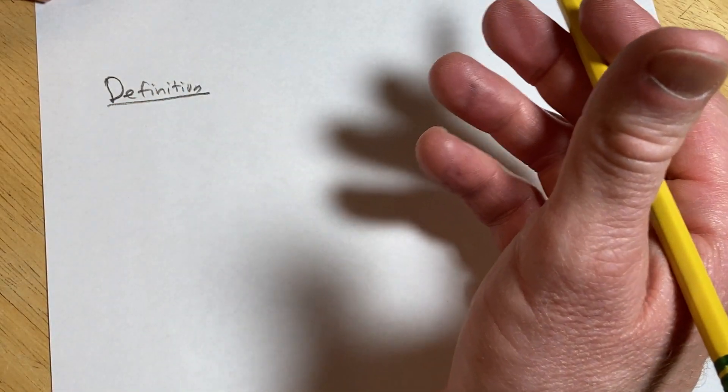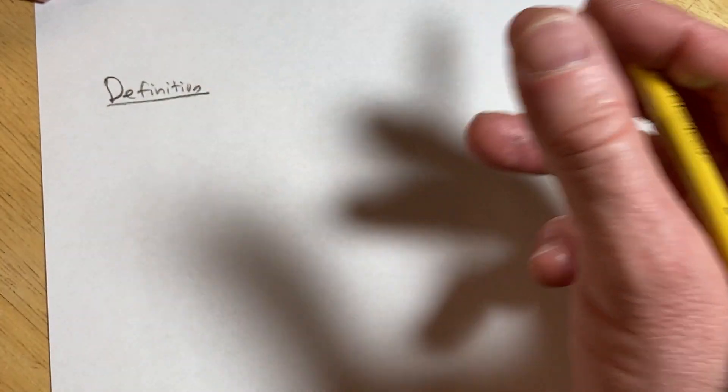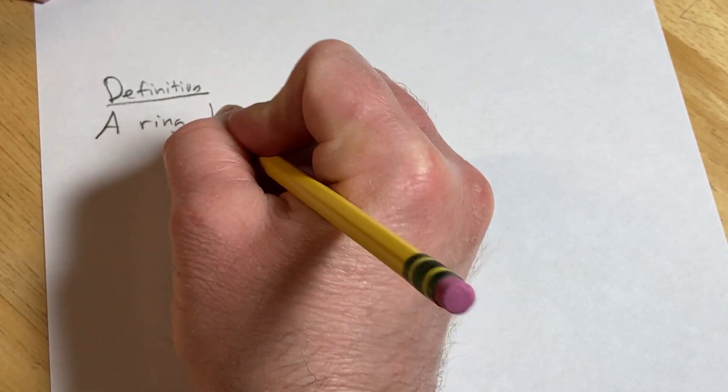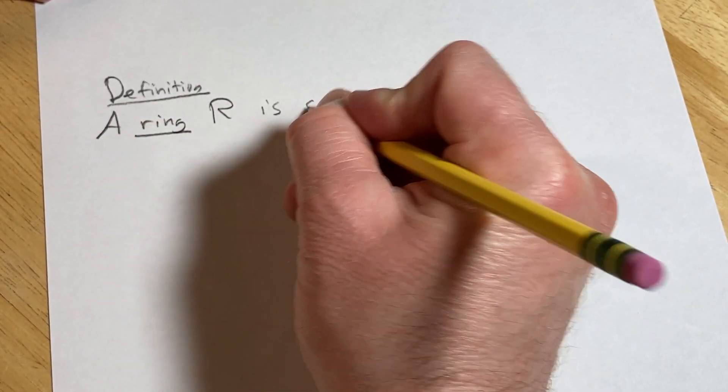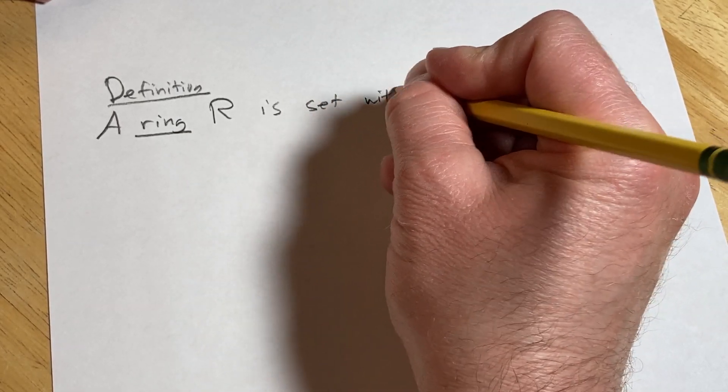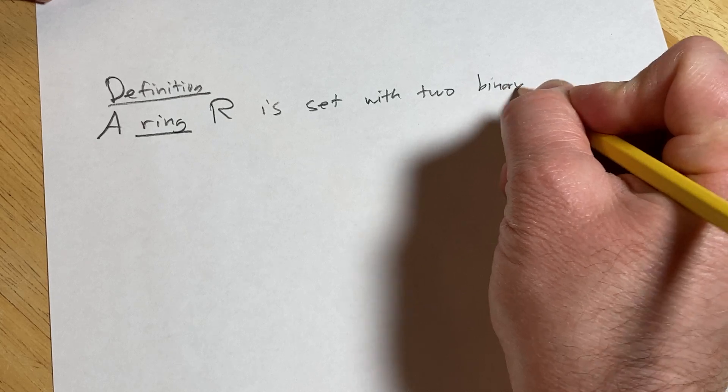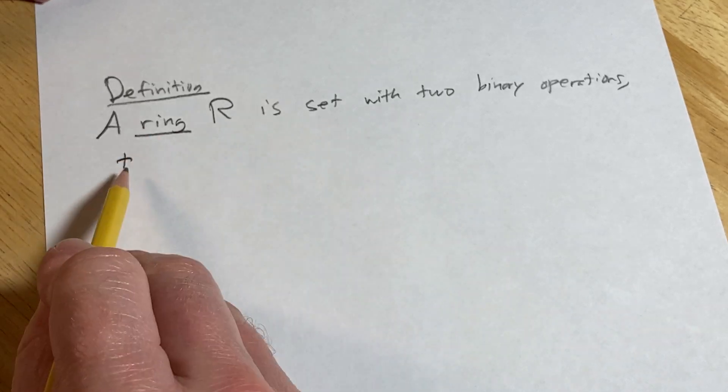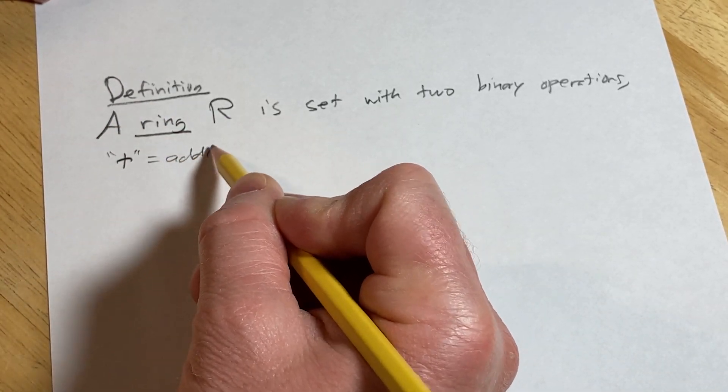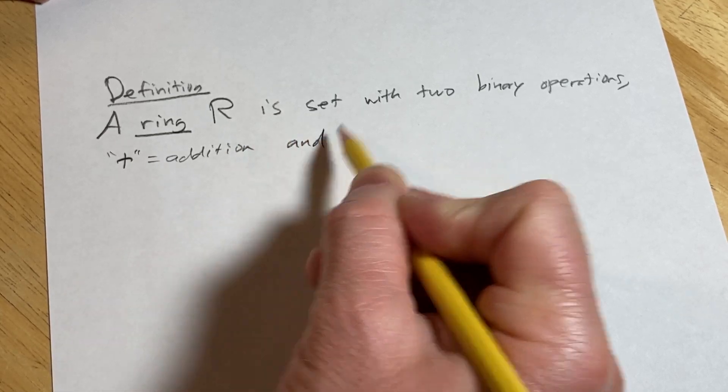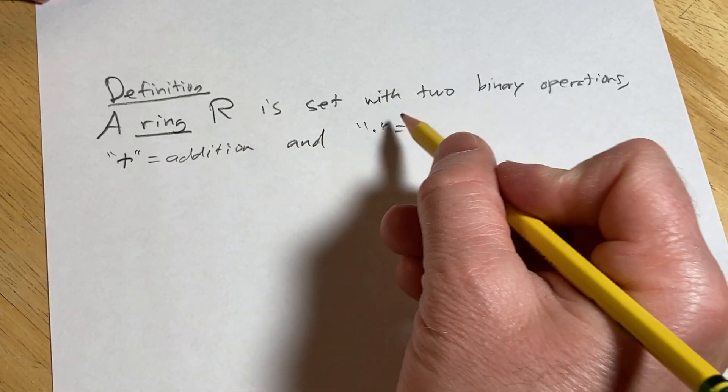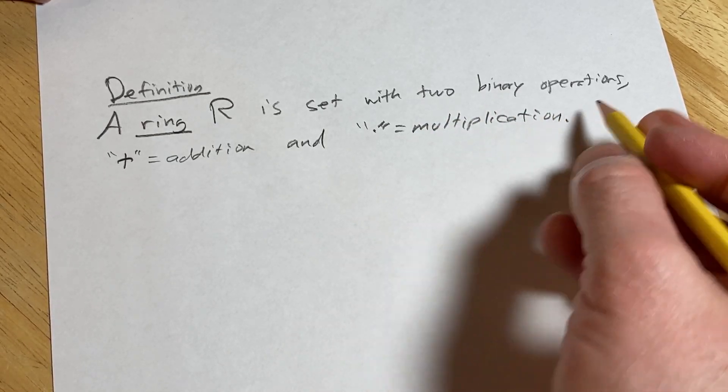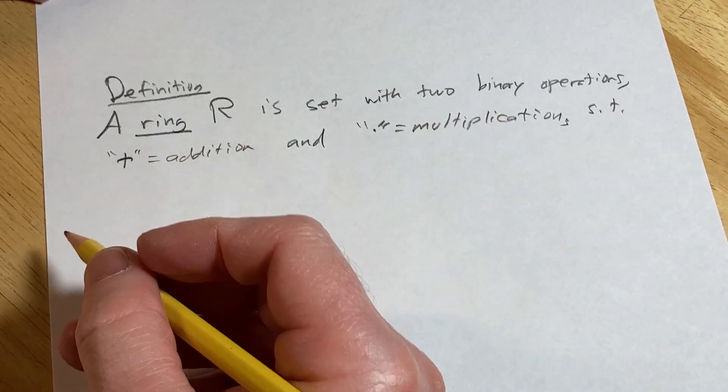A ring is basically a set with two binary operations, which we can call addition and multiplication, which satisfy some properties. So a ring R is a set with two binary operations. This one here, which we're going to call addition, and this one here, which we're going to call multiplication, such that we have the following properties.